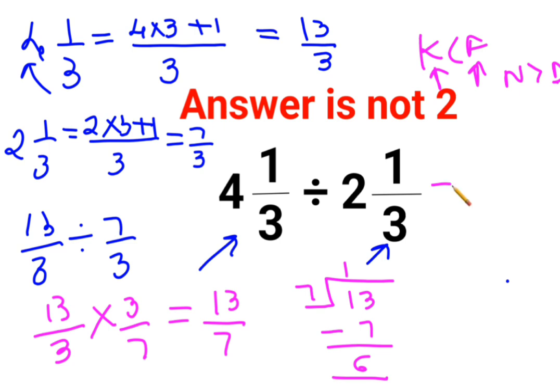So how do I write it in its mixed fraction form? Whatever is your quotient gets written as the integer part. Your denominator continues to remain same which is 7, and whatever is the remainder becomes the numerator. So here the answer is 1, 6 by 7 or I can simply say it is 13 upon 7. I hope this is very clear to everyone. That's it for today. I will see you in the next video.